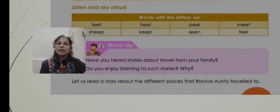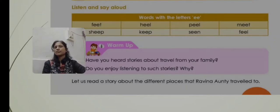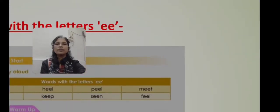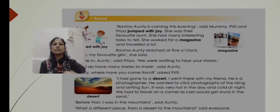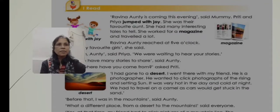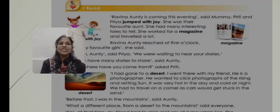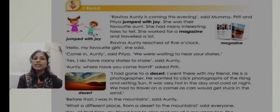Let us read a story about the different places that Raveena Auntie travels to. She works for a magazine and has to travel a lot to different places. Please put your fingers on the text wherever I read. 'Raveena Auntie is coming this evening!' said Mommy. Preeti and Priya jumped with joy. She was their favorite aunt and had many interesting tales to tell. She worked for a magazine and traveled a lot. Raveena Auntie arrived at five o'clock. 'Hello, my favorite girls!' she said.